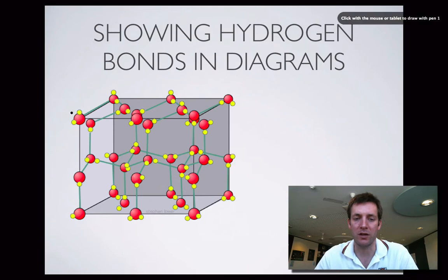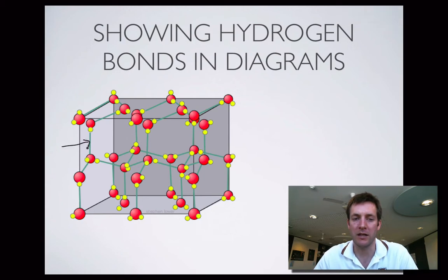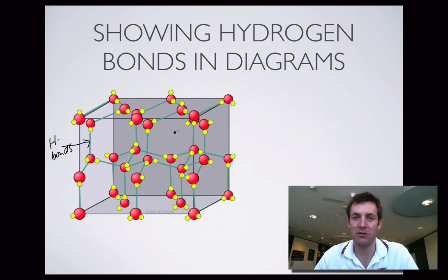You don't have to draw diagrams as complicated as this one. This is just showing you the water molecules in an ice crystal, and these green lines here are the hydrogen bonds. You can see they're much longer than the intramolecular bonds — the bonds between the oxygens and the hydrogens within the water molecules. So these are forces between water molecules; they are just intermolecular forces, not bonds. They're about a tenth of the strength of a covalent bond, to give you a rough idea.